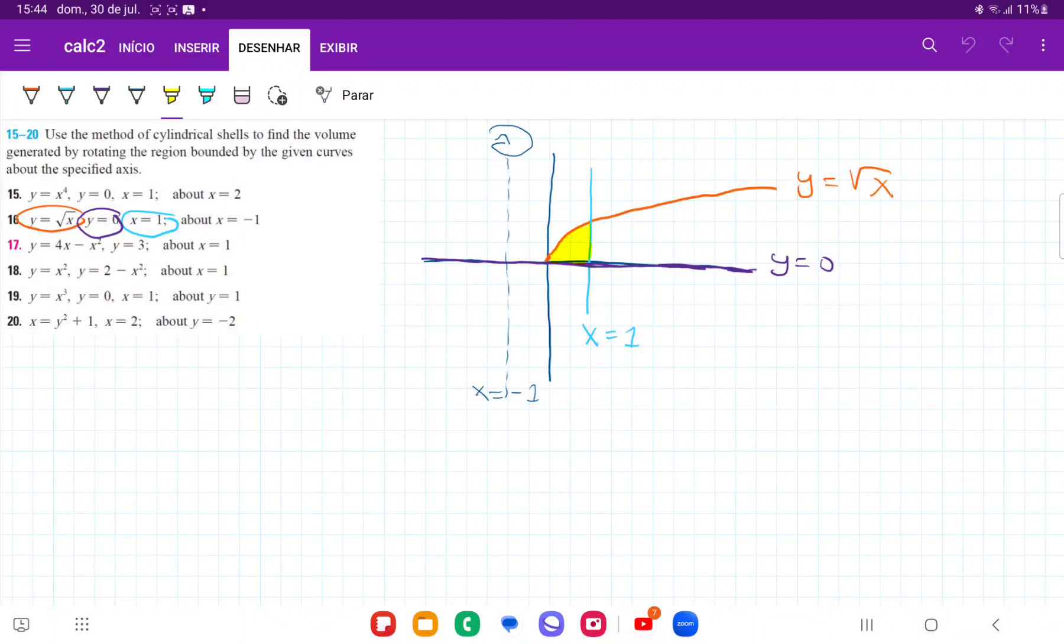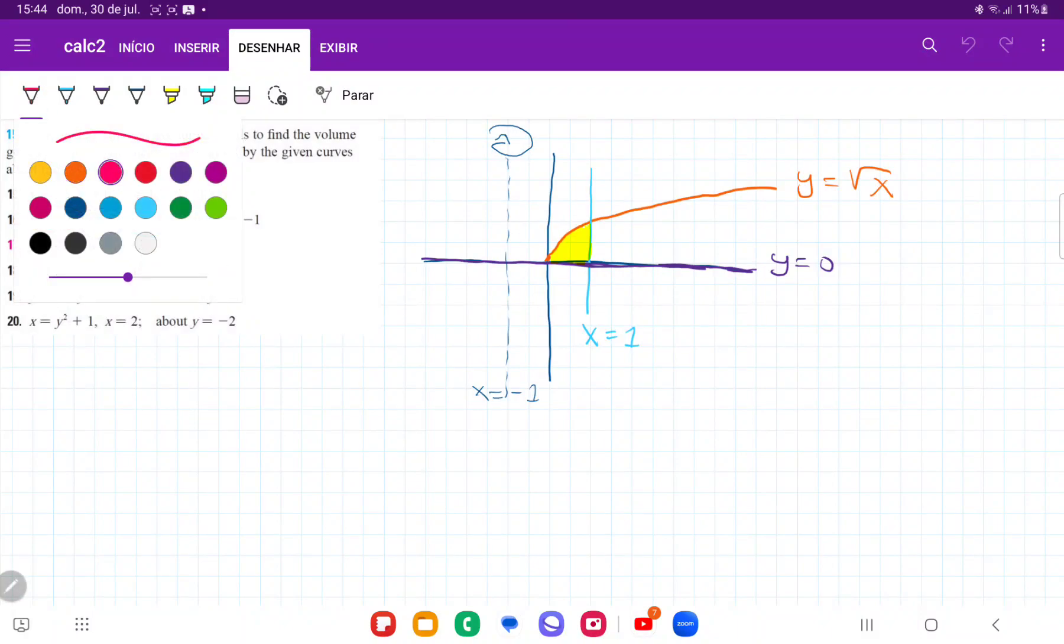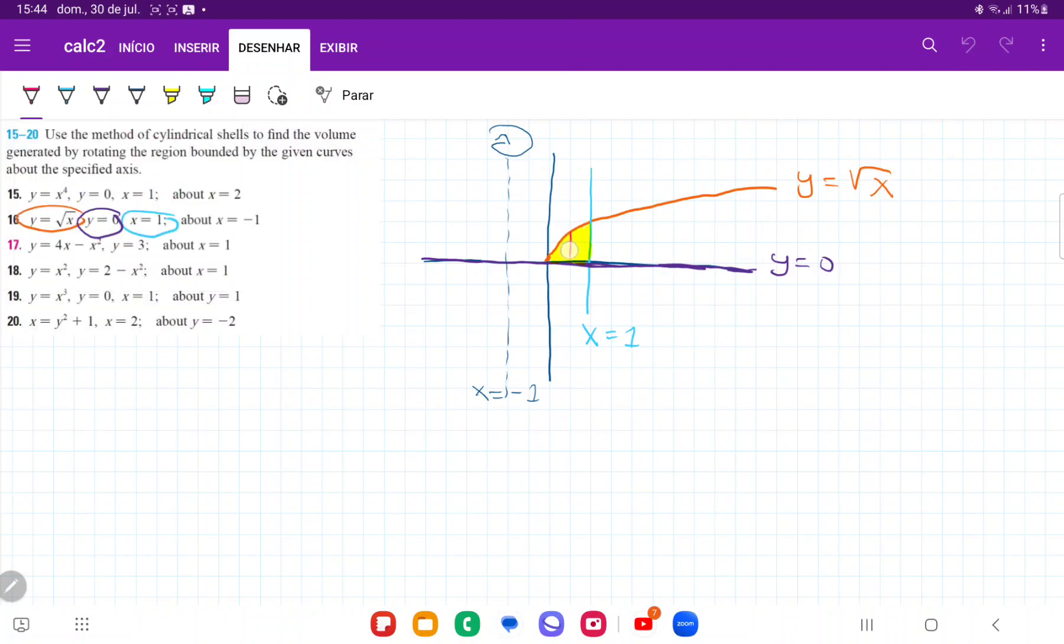So I've gone ahead and I've drawn these curves, and when we rotate about the line x is equal to negative 1, what is going to happen is we're going to have this height here, and we rotate it, and this rotation makes a cylinder.